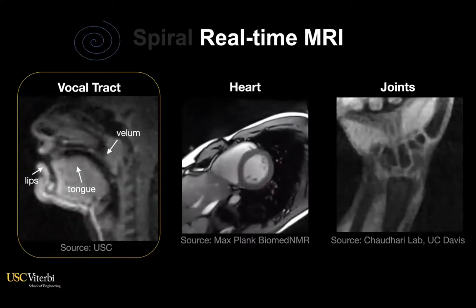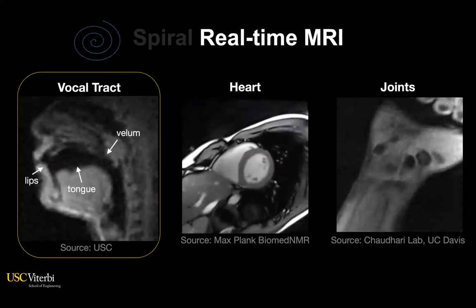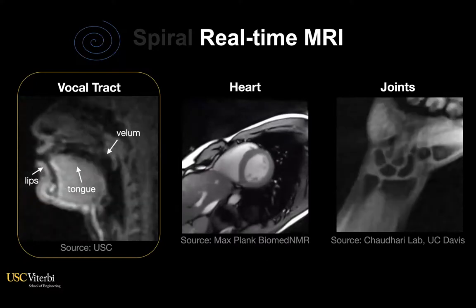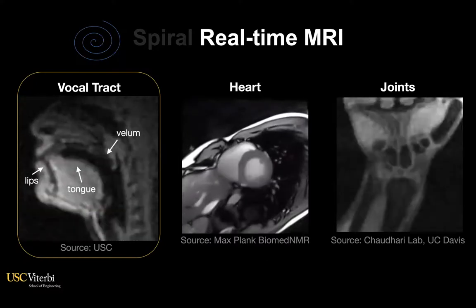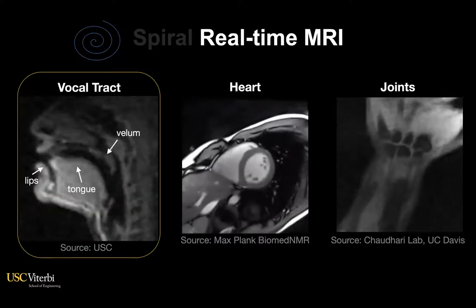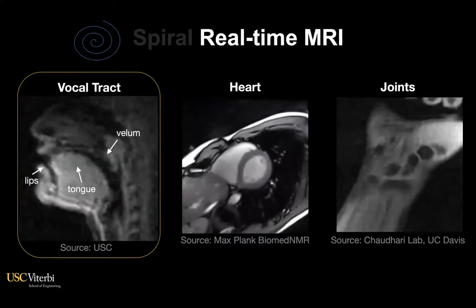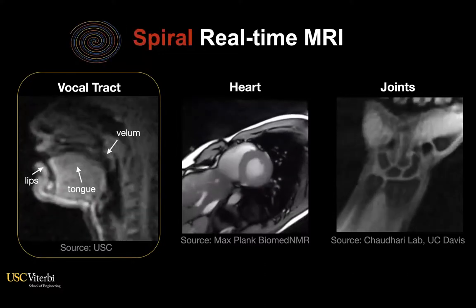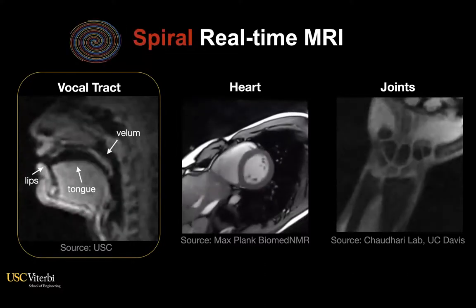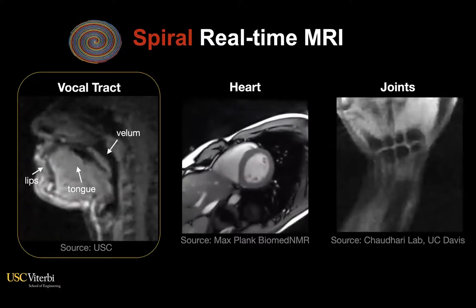For this technique to be able to capture such rapid motion, it is most desirable to keep scan efficiency as high as possible. In this sense, spiral sampling is one of the widely used techniques in this domain.